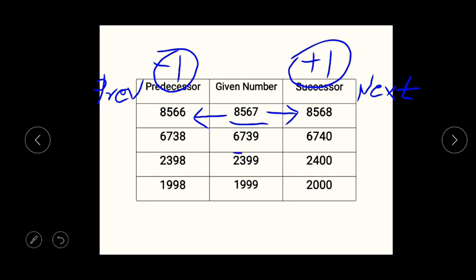Let's take another example. The given number is 6,739. If we add 1 to 39 it will become 40, therefore the next number is 6,740, and if we subtract 1 from 39 we get 38, that is 6,738. Similarly, if the given number is 2,399, if we add 1, the 399 becomes 400 — the hundreds position changes — therefore the next number will be 2,400, and if we subtract 1 from 2,399 it will become 2,398.